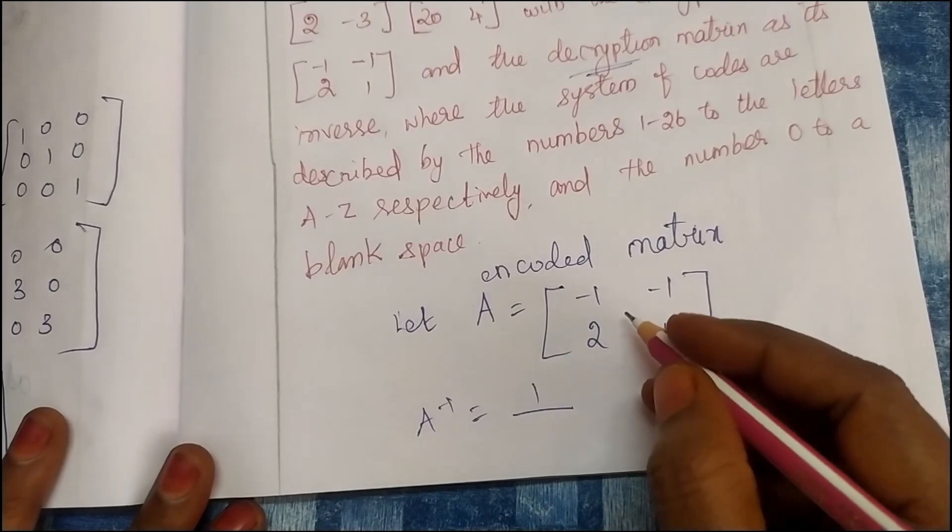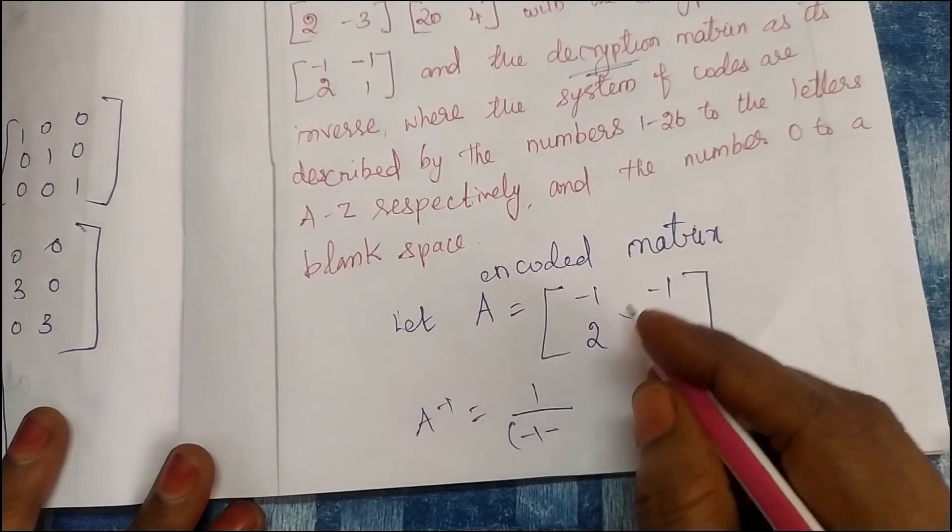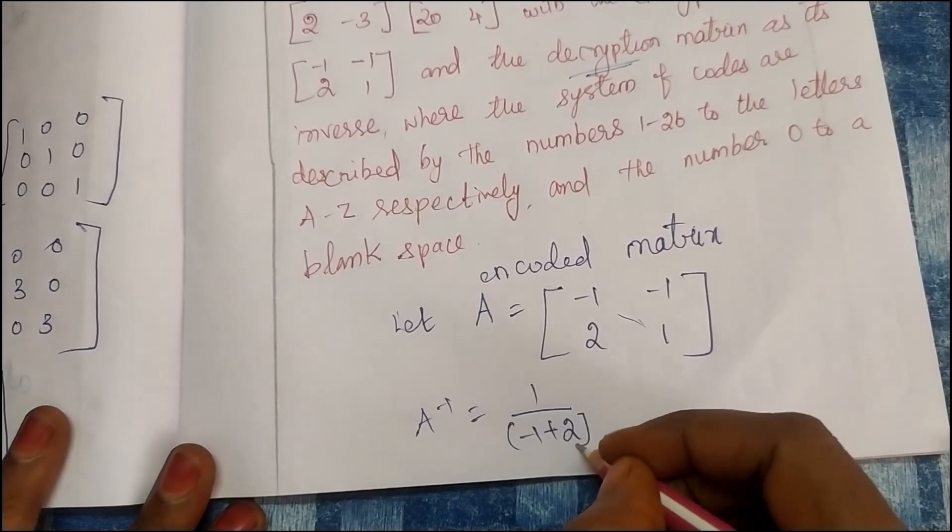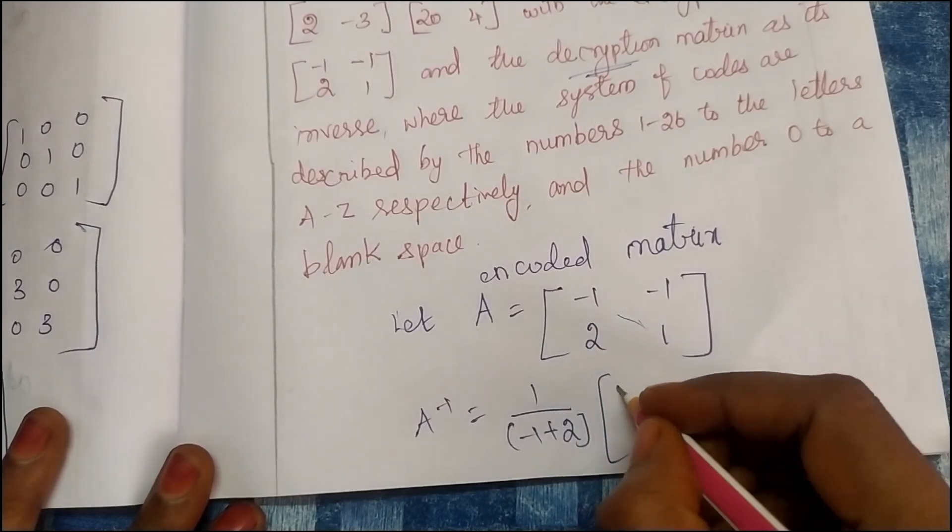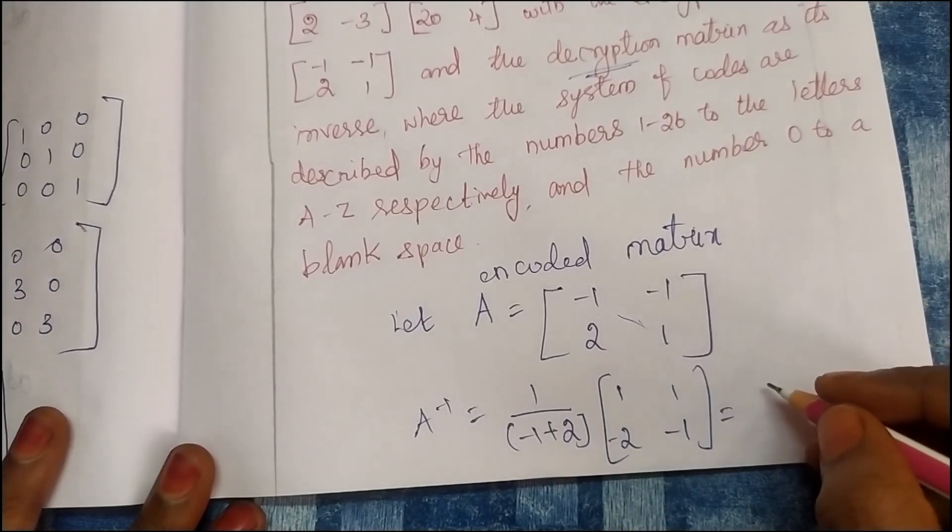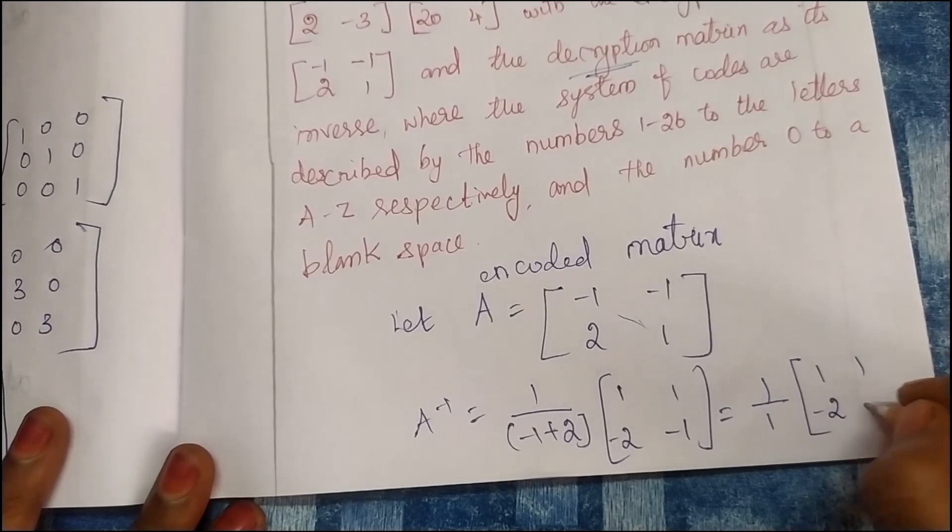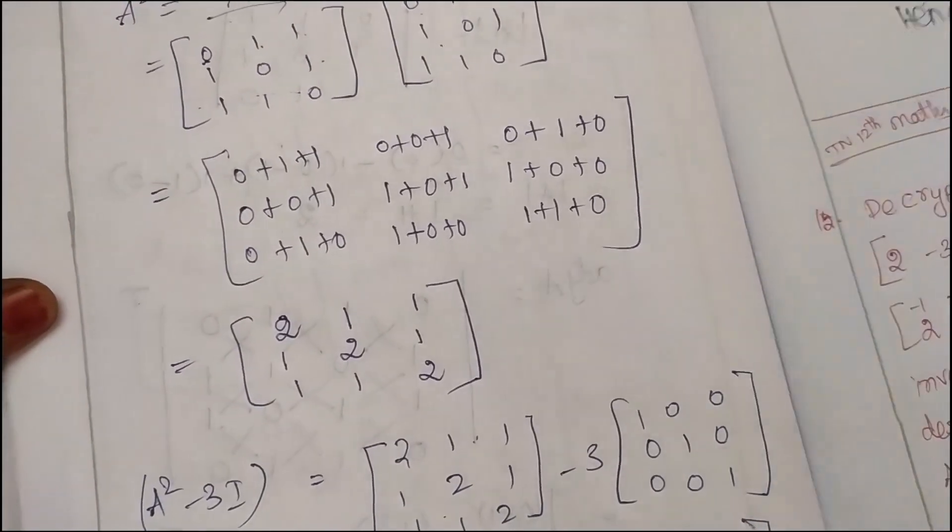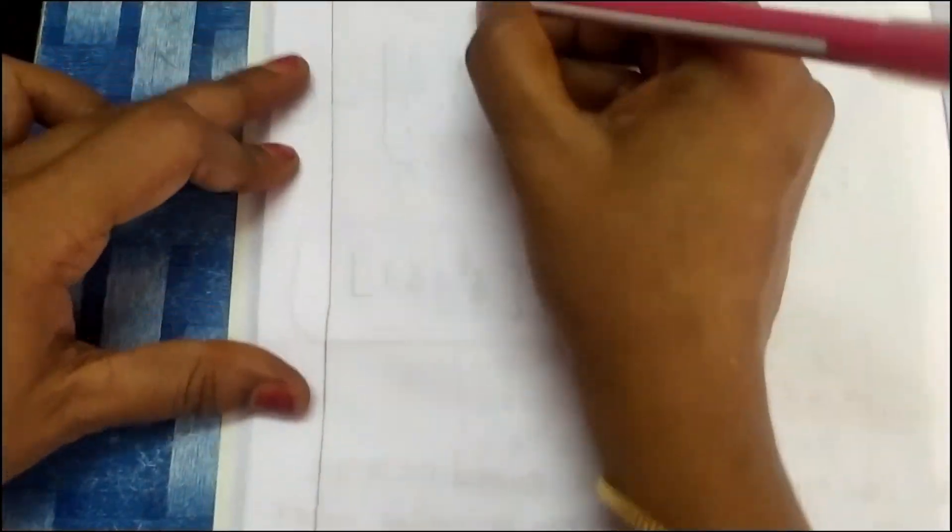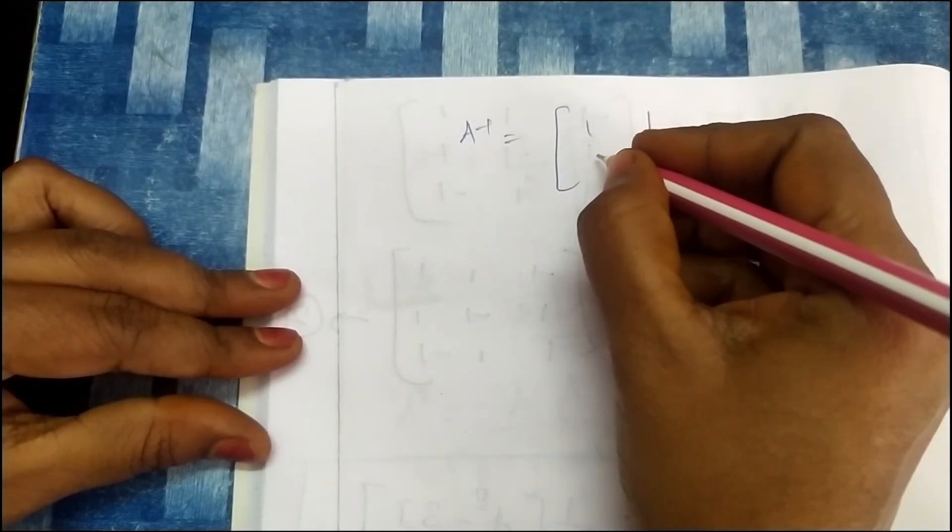A inverse is 1 by mod A. Mod A is cross product: minus 1 times 1, minus 2 times minus 1, plus 2. So here is 1, minus 1, minus 2, minus 1. So A inverse equals 1, 1, minus 2, minus 1.